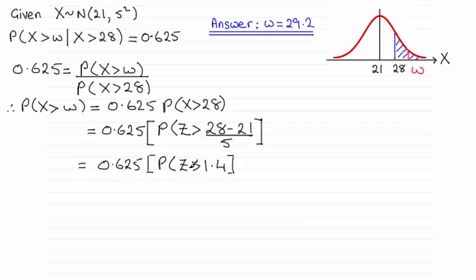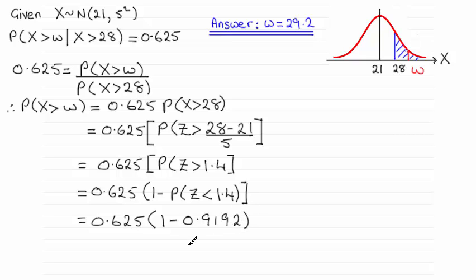Now for a probability of z being greater than 1.4, if we're using tables, then what we need to do is write this as 1 minus the probability of z being less than 1.4. Because our tables remember just give us the value of being less than a z value. So using your tables you should find that when you look up 1.4, you end up with 0.9192. So we've got 1 minus 0.9192. And doing that calculation gives us 0.0505.